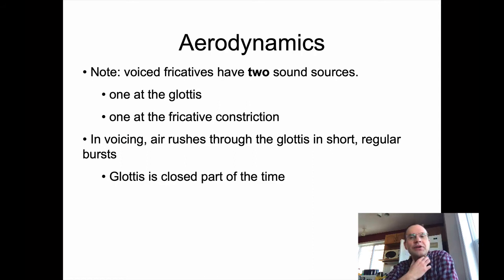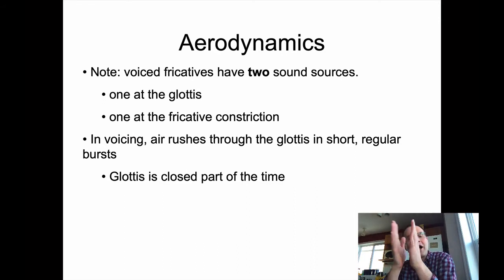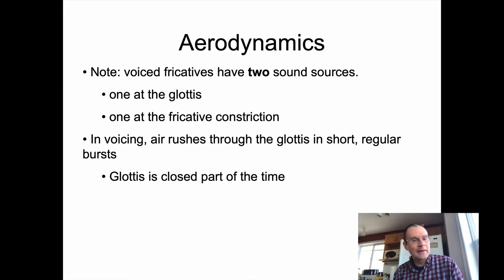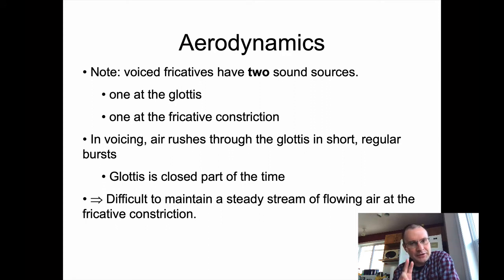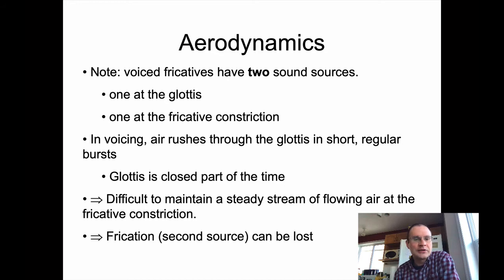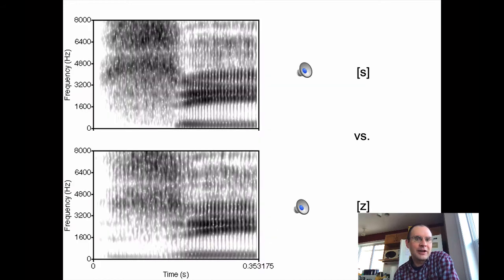The problem is it's not as easy to produce two sound sources as it is to produce one in a fricative. In voicing, air rushes through your glottis in short regular bursts because the vocal folds are popping open and closed on a quick and regular basis. Part of the time the glottis is actually going to be closed — it's a short but regular interruption of airflow. That airflow will be interrupted at the other sound source when you try to produce a voiced fricative, so you don't have a constant stream of air to make the fricative. You're trying to do two things at once, and one makes the other more complicated.